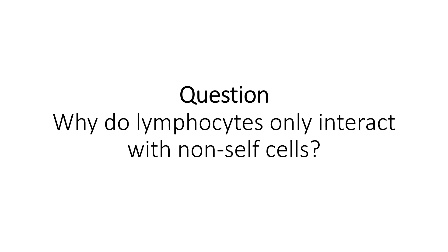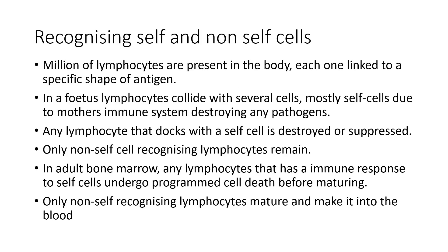Why do lymphocytes only interact with non-self cells? As a fetus develops, any lymphocytes that interact with the body's own cells during development are identified and destroyed. This means the only lymphocytes left are those that will not dock with the cells found inside the fetus — we call these the self cells. In adults, if any lymphocytes mount an immune response against a self cell, they undergo programmed cell death to ensure they don't mature and become a problem.